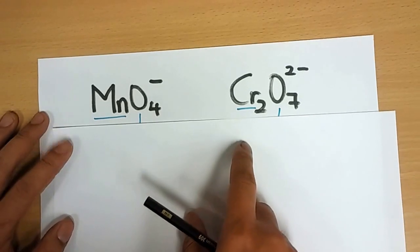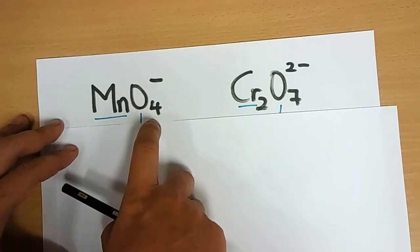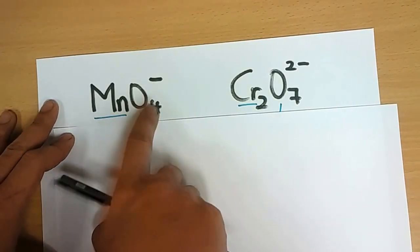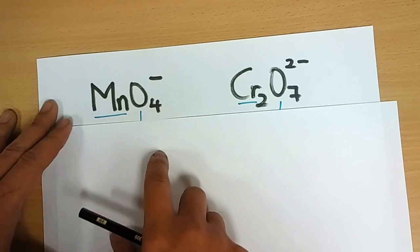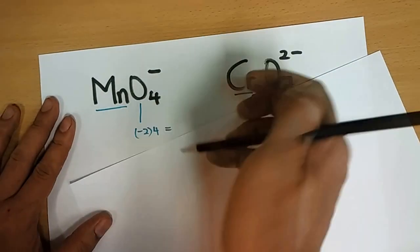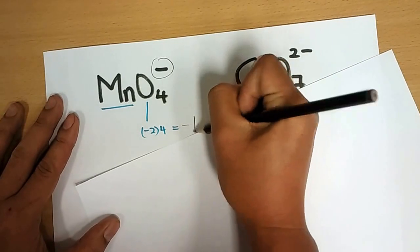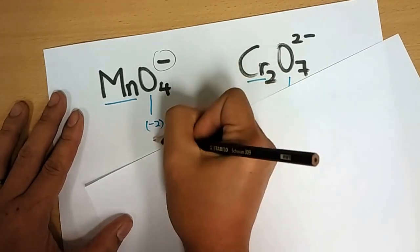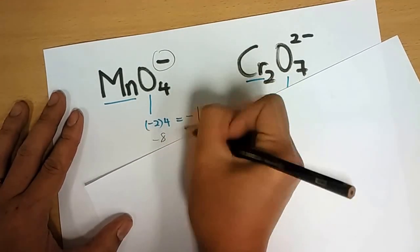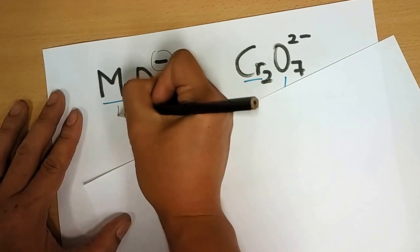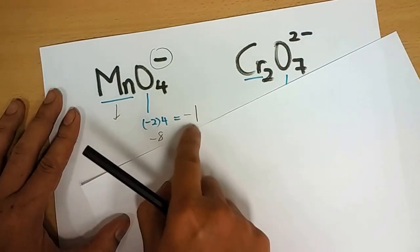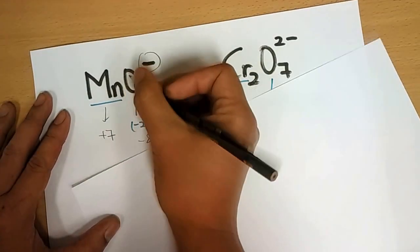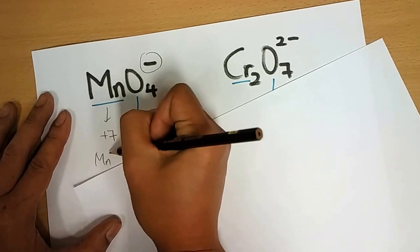Oxidation states don't have to always be small numbers — they can be higher charges as well. For permanganate MnO₄⁻: oxygen is minus two, there are four oxygens giving minus eight, and the overall charge is minus one. So everything must sum to minus one, meaning manganese must be plus seven. So manganese has a special oxidation state of plus seven.